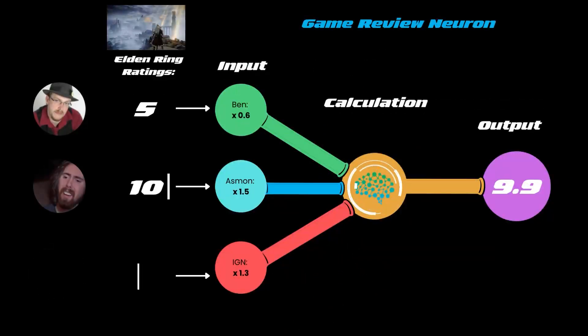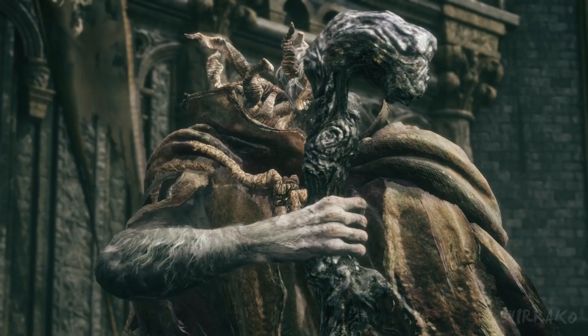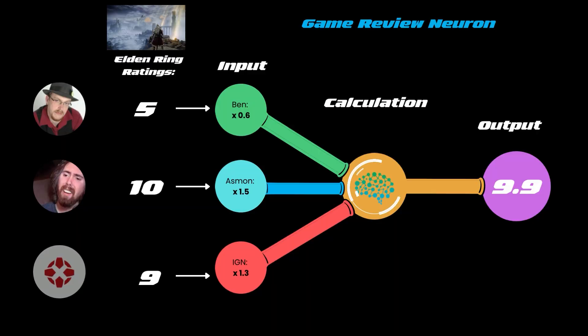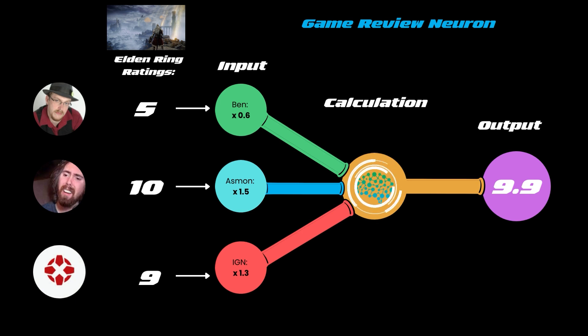Now let's train the neuron again. We have a second game to review: Elden Ring. And here are the ratings from our critics. Ben again gives the game a low score of 5, but Asmongold and IGN give a 10 and a 9. This time the artificial neuron will give more weight to Asmongold's and IGN's ratings when calculating its recommendation.